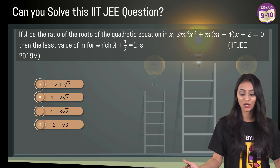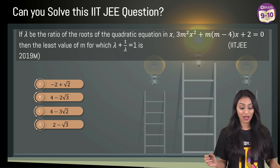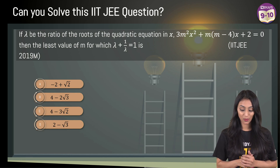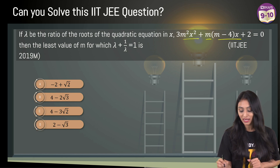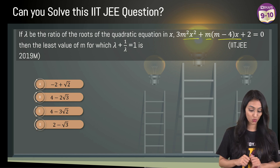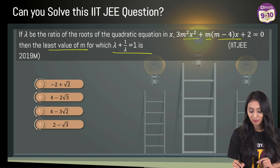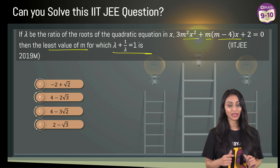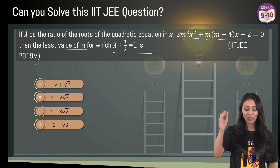Let's quickly take a look at the question. If lambda be the ratio of the roots of the quadratic equation in x: 3m²x² + m(m − 4)x + 2 = 0, then find the least value of m for which lambda + 1/lambda = 1. This was asked in the 2019 IIT JEE paper.